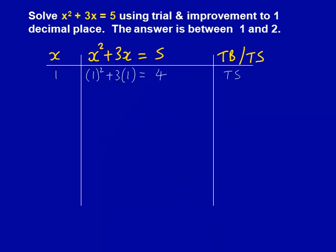As the answer is between 1 and 2, the first number we put in is 1. Please notice how I put the 1 in brackets, just as it's written in the question. This means you can type it in exactly as it looks here, and it will give you the correct answer on a calculator. When we put in 1, we got the answer of 4, which was too small, so we put TS at the end of the column.